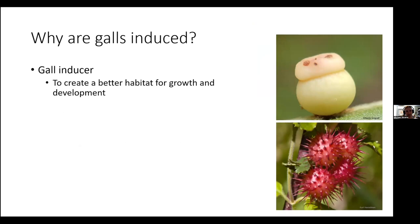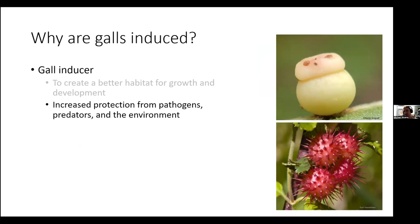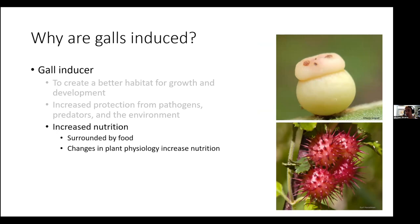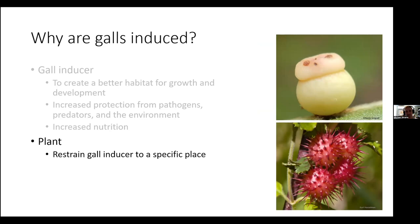Why are galls induced? For the gall inducer — the insect making the galls happen — it creates better habitat for growth and development. A larva inside a gall has protection from pathogens, predators, and the environment. It's not getting rained on, it's protected from the sun. They can also increase nutrition since you're surrounded by your food source. When galls are made, some can change plant physiology so the gall has increased nutrition for the insect inside compared to other plant tissue. For the plant, the benefits are less clear. Plants are harmed because nutrients are taken away, but galls do restrain the gall inducer to a specific place rather than having a caterpillar chewing away and destroying entire leaves.